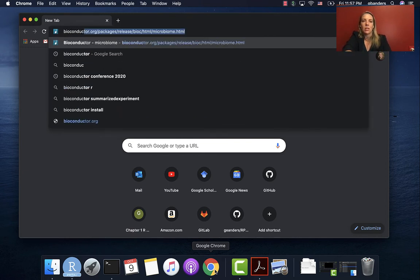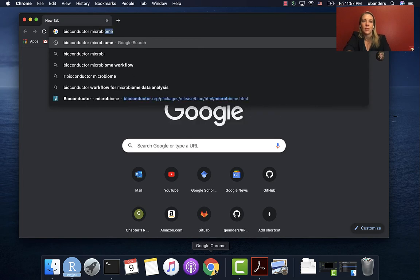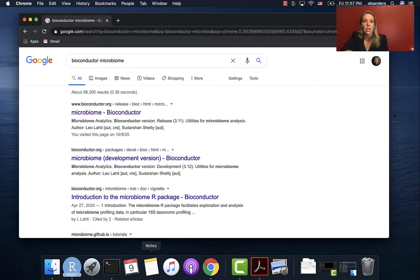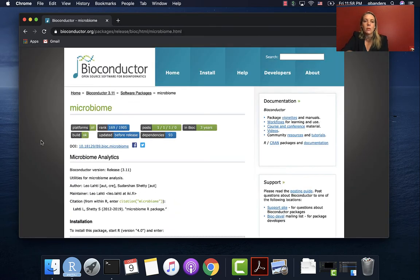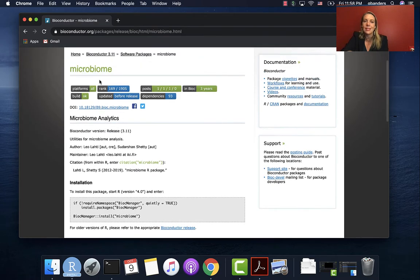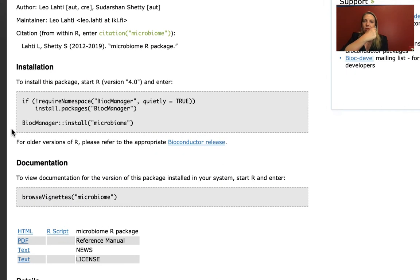If you search for Bioconductor and then search for microbiome, that's the name of this package, you should get a link. This is the page for that information, and you have to install these packages just a little bit of a different way if they're coming from Bioconductor. This code, if you copy and run it in your R session, will install the package for you.